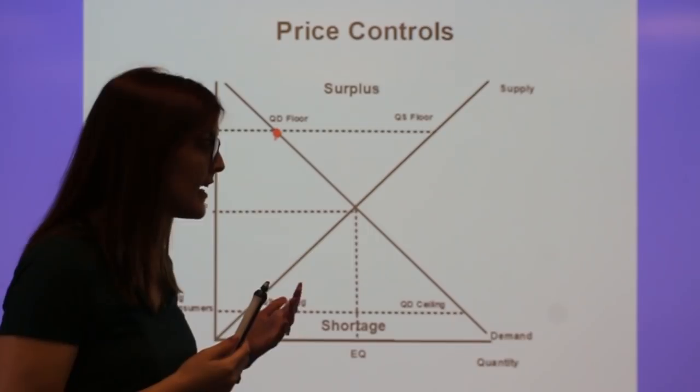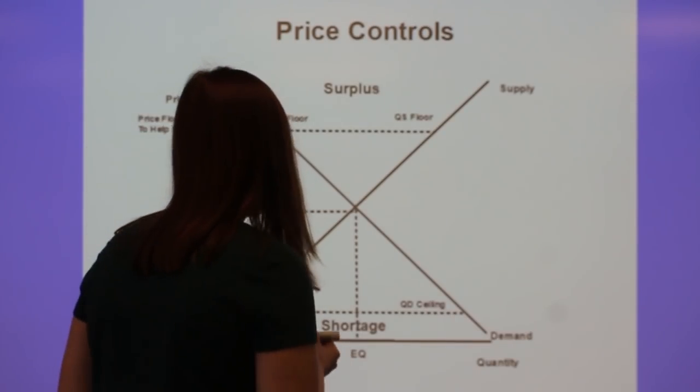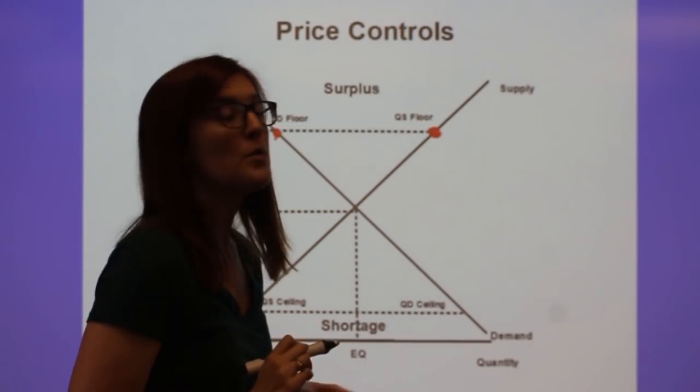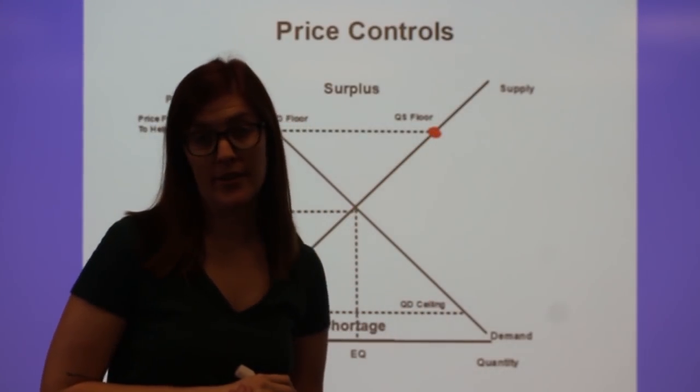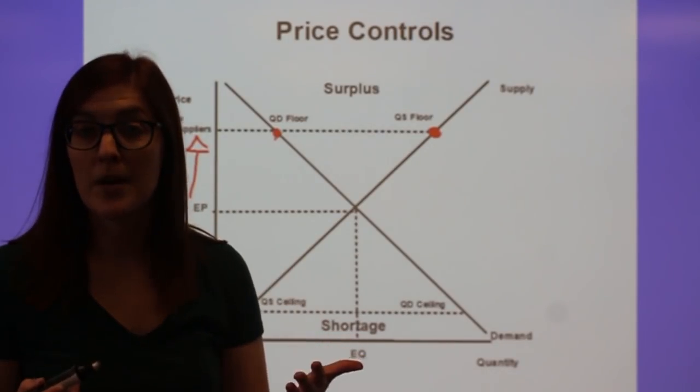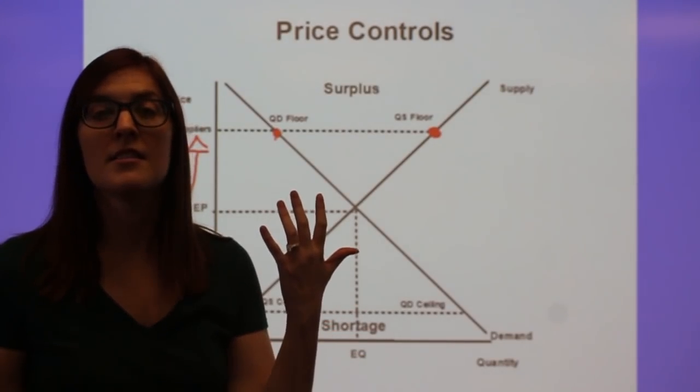Now with supply, it's upward sloping to show the law of supply that at a higher price, the producers want to sell a larger quantity, which I show by a movement up along the line. Which producers want to sell as much as they can at the highest price possible. That's just basic supply.